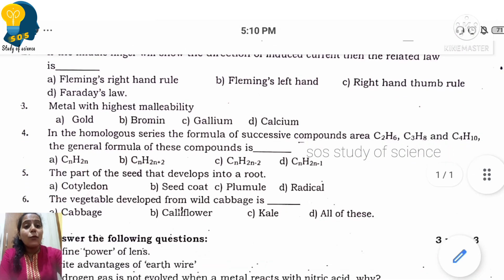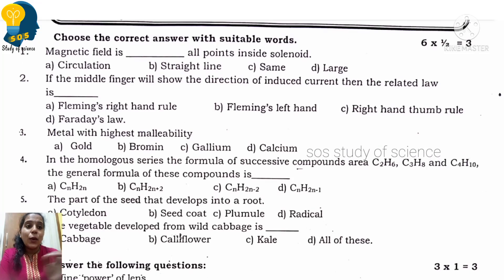Moving to next question. In the homologous series the formula of successive compounds are C2H6, C3H8, and C4H10. So this is easy - the alkanes concept, saturated and unsaturated formula. The right answer here is option B, that is CnH2n+2.